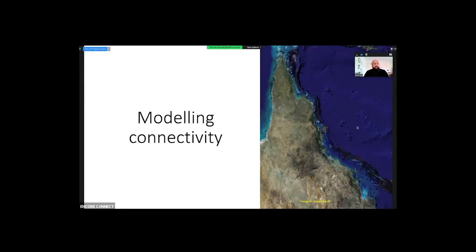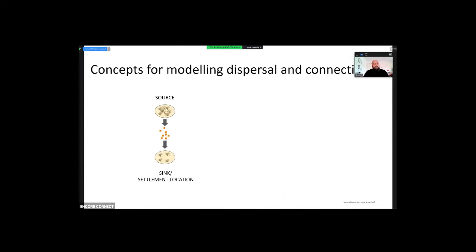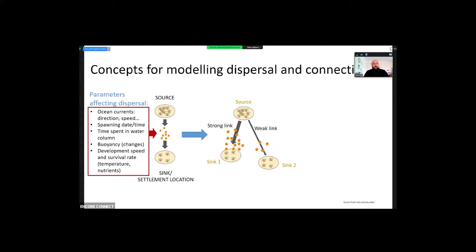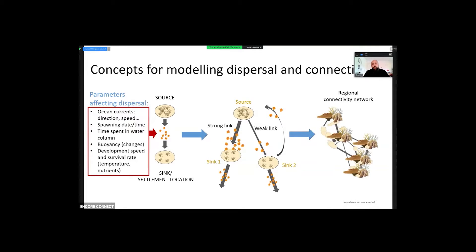When we talk about modeling connectivity, what we're trying to do is model source-sink relationships between reefs, where which reef is source and which reef is sink is determined by a lot of different factors that affect dispersal, which we hopefully get from field and experimental studies. We want to model not just individual source-sink relationships but at the wider scale — where more larvae go, where less larvae go, what happens after that, and whether there are feedbacks. When we model this from a lot of reefs, not just a single reef, we get a regional connectivity network.